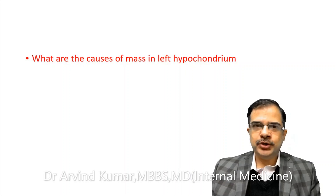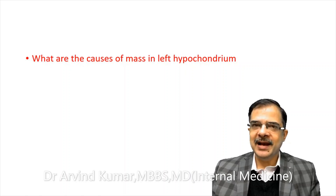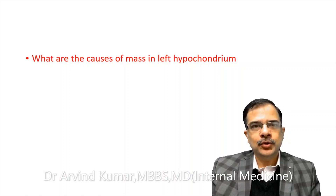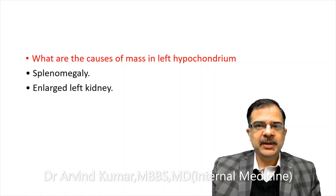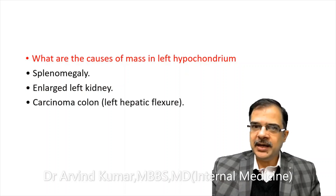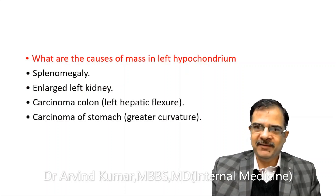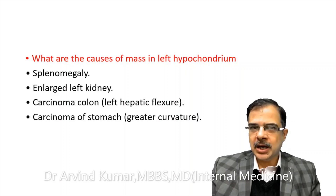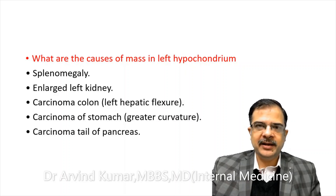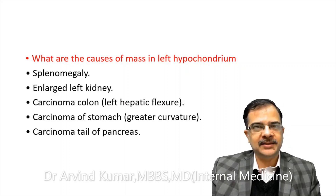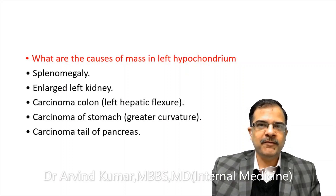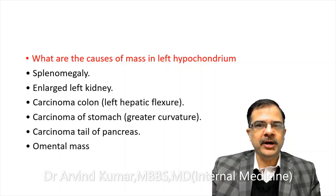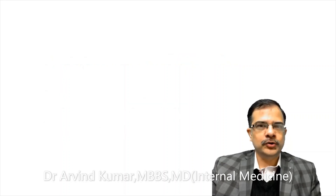The next question: what is the differential diagnosis of a mass in the left hypochondrium? Other organs which can be palpable besides the spleen and the kidney are carcinoma of the colon at the left hepatic flexure, carcinoma of the stomach at the greater curvature, or carcinoma of the tail of the pancreas. An omental mass can also be there.